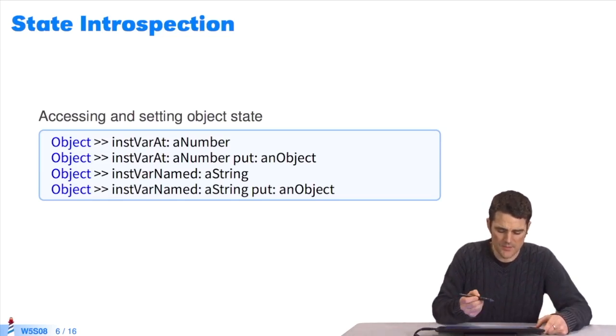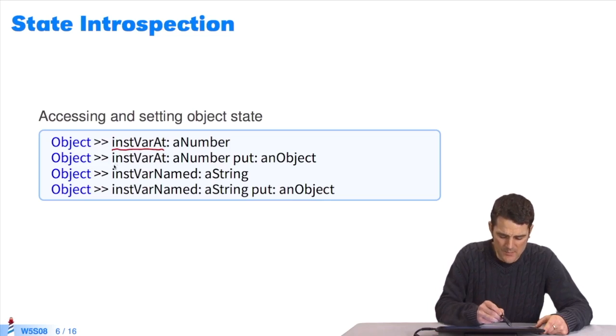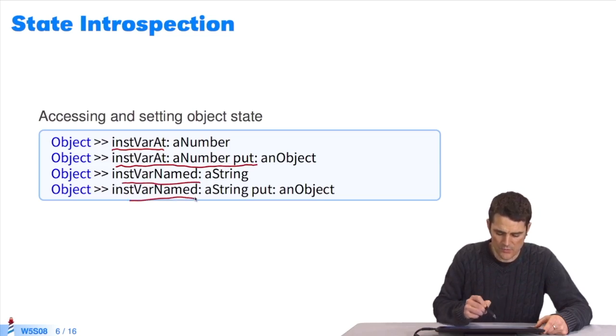There are lots of them, defined as objects. So, instVarAt allows us to see an instance variable according to its number. I'll see instance variable number 1 of this object. I can modify instance variable number 1 of this object by setting a new value. Or, I can access an instance variable by its name, or change it by its name, instVarNamed put.